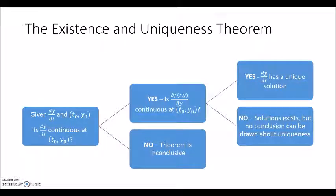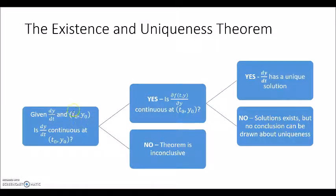In a previous video we looked at the existence and uniqueness theorem for ordinary differential equations. We found that there are a couple of conditions that, once met, guarantee that the differential equation along with the initial condition have a unique solution. This relies on knowing two components: the differential equation, and the initial condition.